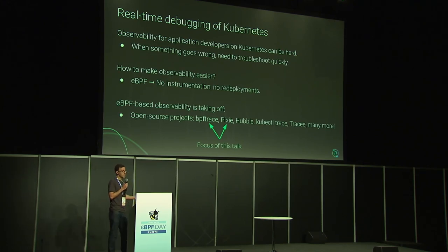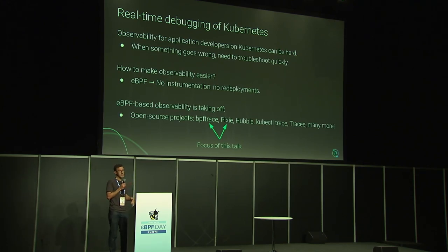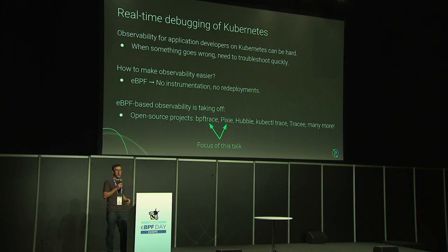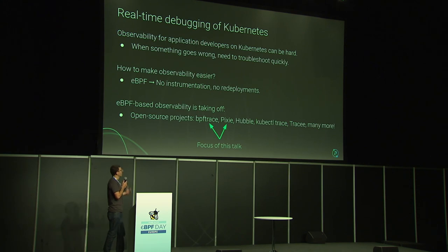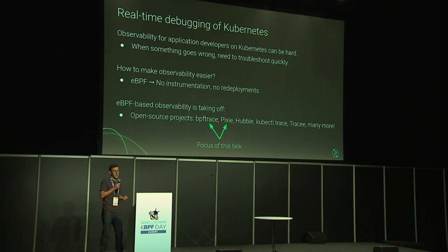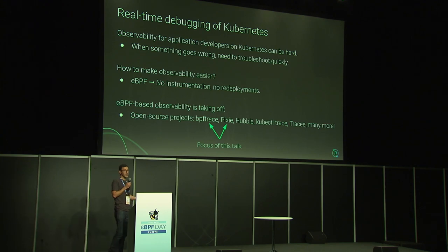Real-time debugging of Kubernetes is challenging. We all know that. Debugging — we get frustrated when things go wrong, and we need to have the right tools available to debug things on the fly. We're always looking at how we can make observability easier.